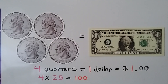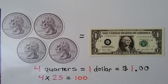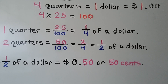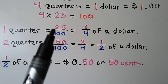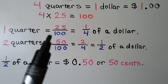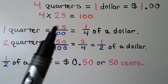Four quarters equal one dollar. We write it as a dollar sign, a one, a decimal point, and then two zeros to show there's no cents. Four times 25 is equal to 100, so four quarters equal one dollar or 100 cents. One quarter, which is 25 cents, is equal to 25 hundredths.